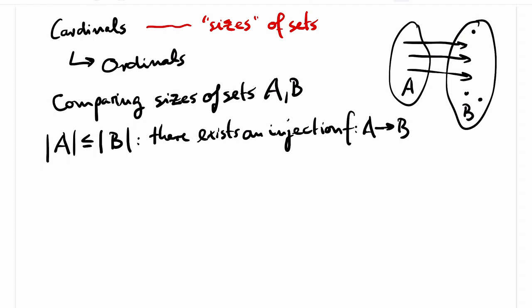So our next step is the definition of what it means that A and B have equal cardinality. For that, I require that the function is bijective. So in addition to being injective, it must also be surjective. Every element of B must be the image of an element of A under F.